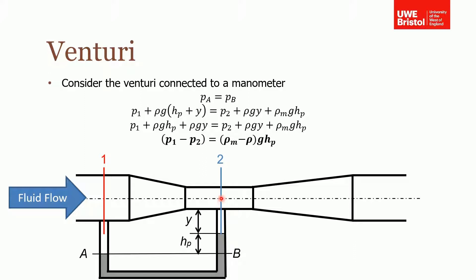Now the pressure at B is slightly different. So it's the static pressure at two, which is in the throat, plus the ρg times the height y, remembering that this density is the density of the fluid. But then it's plus the density of the fluid in the manometer, so that's what that subscript m means - density of the fluid in the manometer times gravity times hp. And if we expand the bracket on this side, we can see that these two terms now cancel and we can rearrange to show that the pressure difference is equal to the density of the fluid in the manometer minus density of the fluid in the pipe times by gravity times by the head of the manometer.